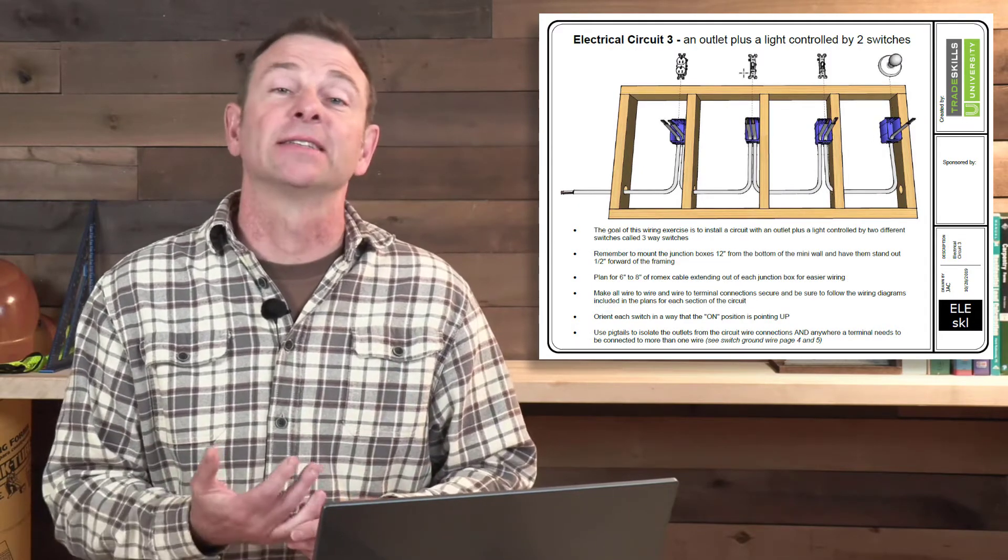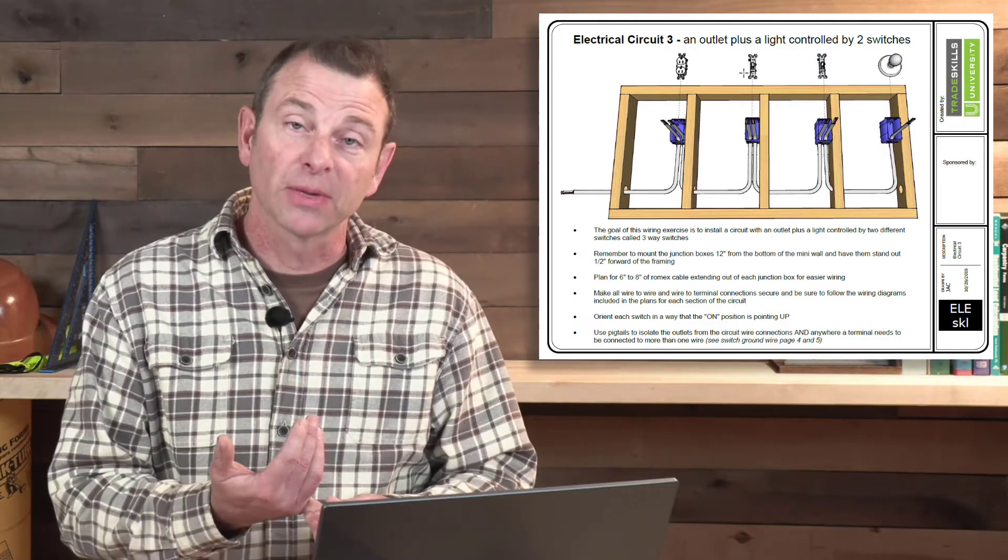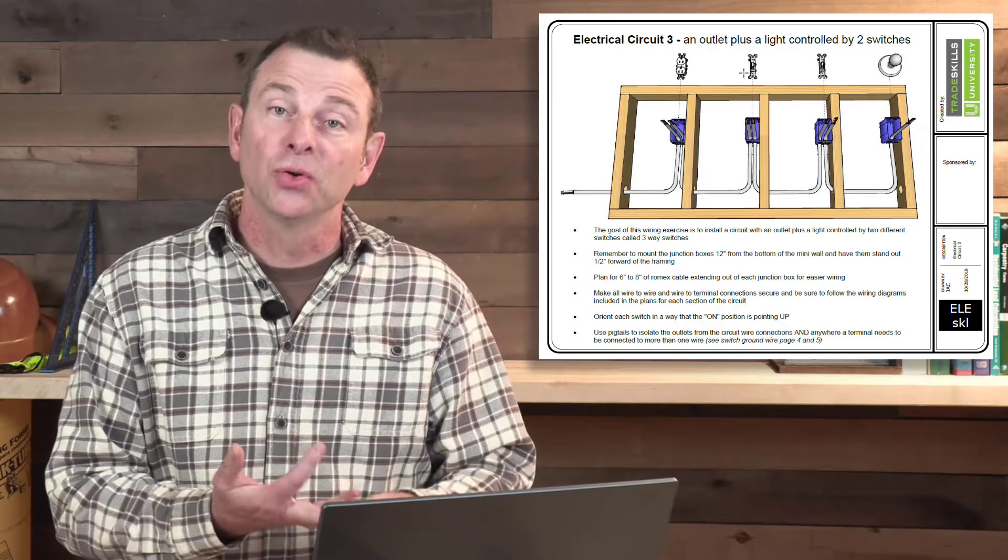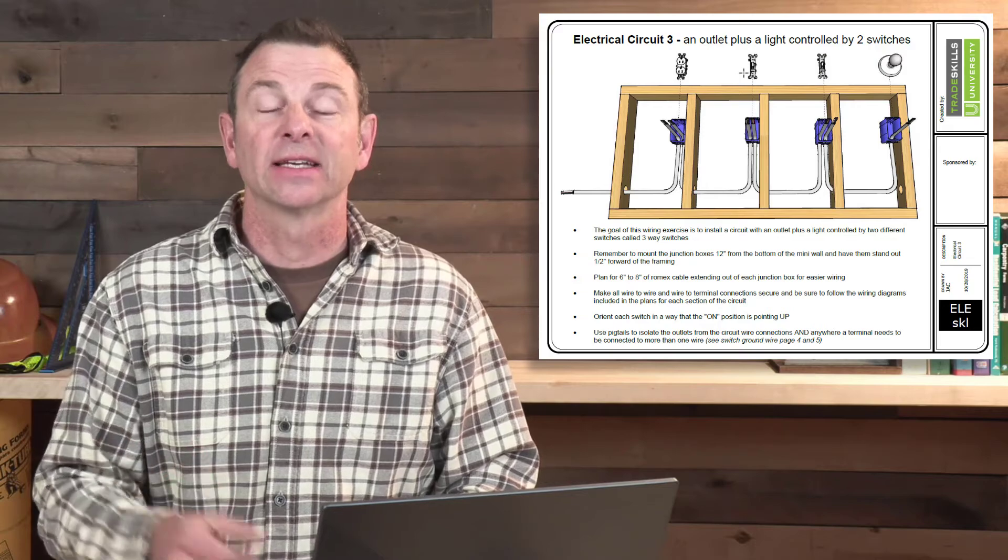The plan set for circuit number three has the students run one duplex outlet and then two switches that operate a single light fixture.